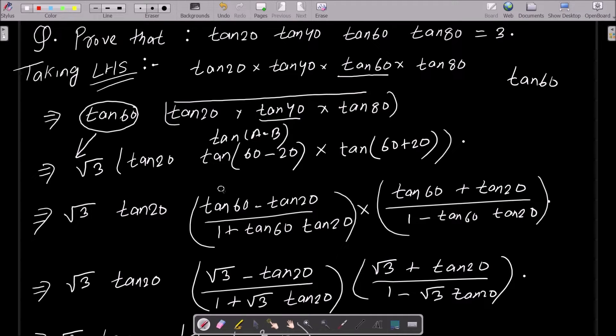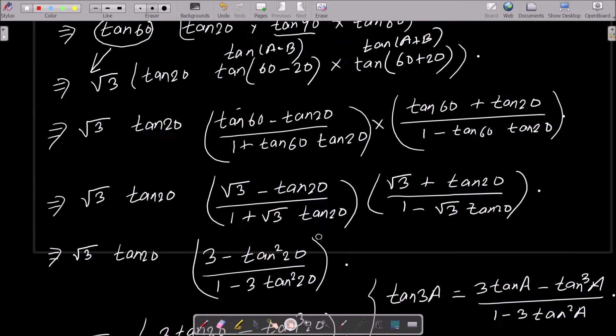So here (tan60° - tan20°) divided by (1 + tan60° tan20°). And this here is the tan(A + B) formula, that is (tan60° + tan20°) divided by (1 - tan60° tan20°). After that, put the value.